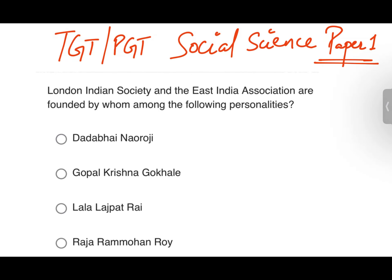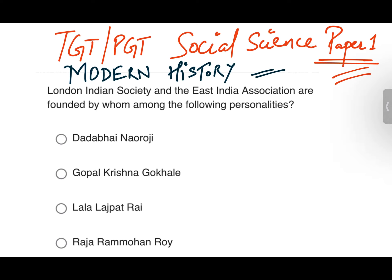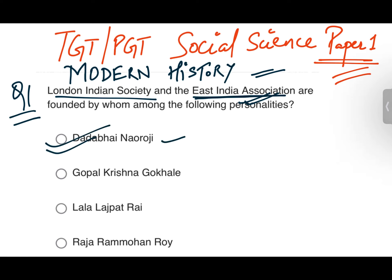Good morning. Today we are going to do some questions of TGT Social Science, Paper 1. Let's start with Modern History. Question number one: London Indian Society and East India Association are founded by whom? The East India Association was established by Dadabhai Naoroji, so the answer should be Dadabhai Naoroji. He was known as the Grand Old Man of India.